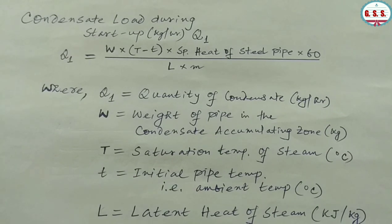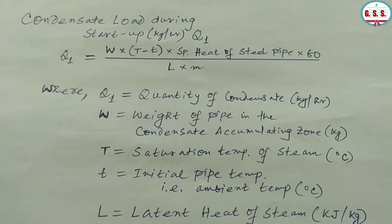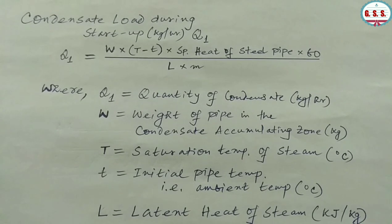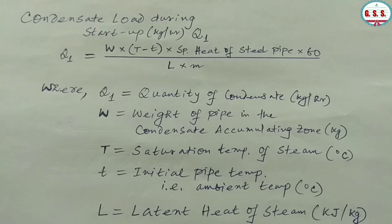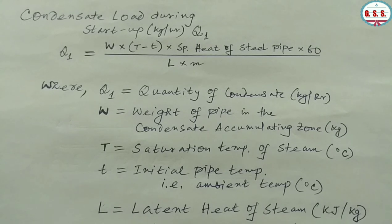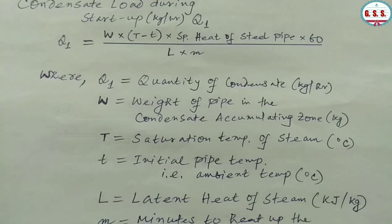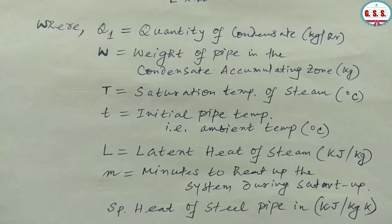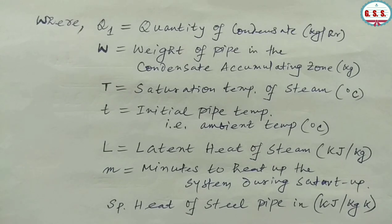Condensate load during startup means the amount of condensate that forms to warm up the pipeline during initial startup. Q1 = (W × (T − t) × specific heat of steel pipe × 60) / (L × M), where Q1 is quantity of condensate in kg/hr, W is weight of pipe in the condensate accumulating zone in kg, T is saturation temperature of steam in °C, t is initial pipe (ambient) temperature in °C, L is latent heat of steam in kJ/kg, M is warm-up time in minutes, and specific heat of steel pipe is in kJ/(kg·K).